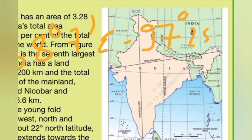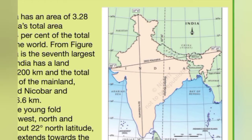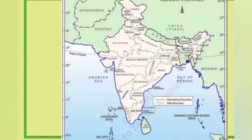From these latitude and longitude points we get an idea of India's position and location in respect to the world. There are also many important latitudinal lines such as the Equator, Tropic of Cancer, and Tropic of Capricorn.